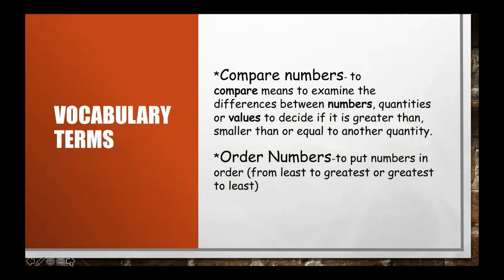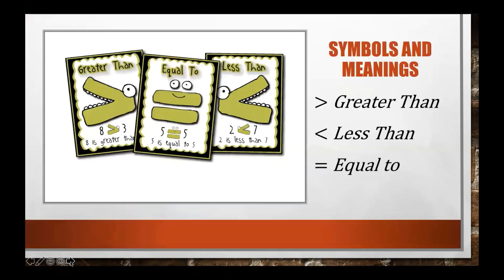Compare numbers means to examine the differences between numbers, quantities, or values to decide if a number is greater than, smaller than, or equal to another quantity. Order numbers means to put numbers in order from least to greatest or greatest to least.